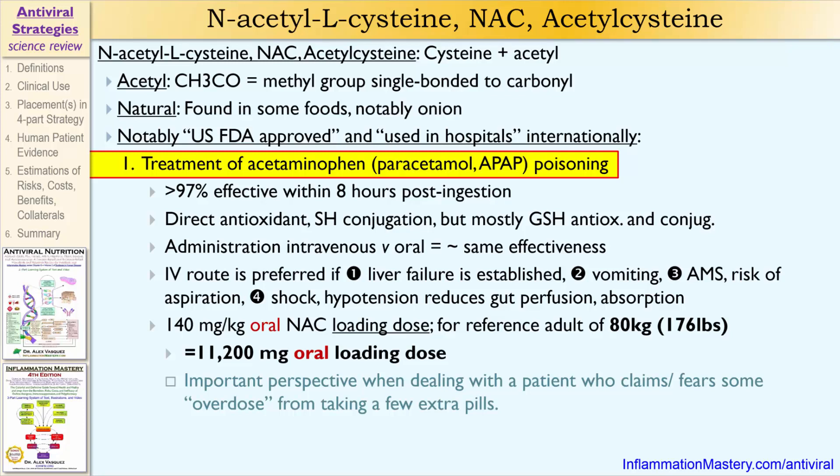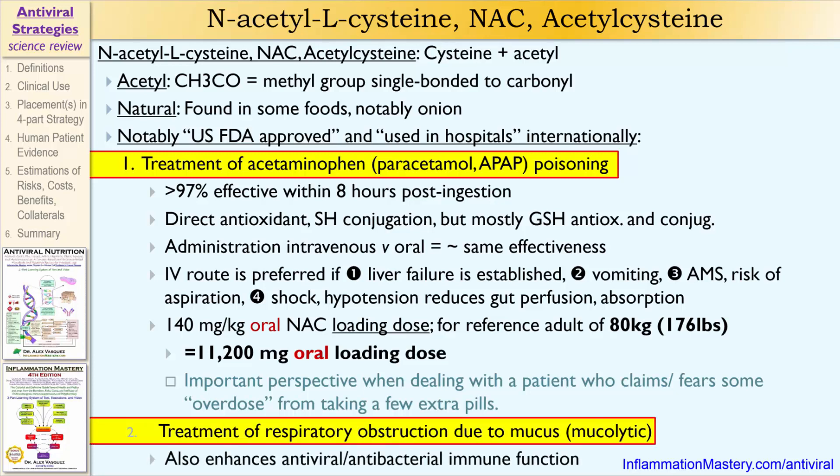At that point, 11 grams of NAC can be life-saving. The second major hospital use of acetylcysteine is for its mucolytic effect — acetylcysteine helps to dissolve mucus so that patients can cough it up and keep their airways open. It has also been shown that acetylcysteine in the treatment of lung diseases improves antiviral and antibacterial immune function.